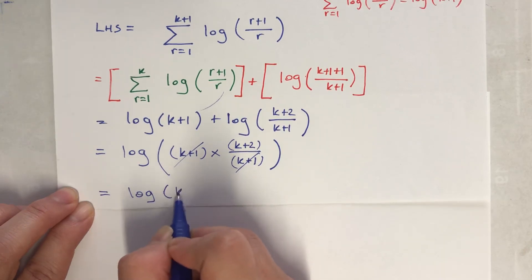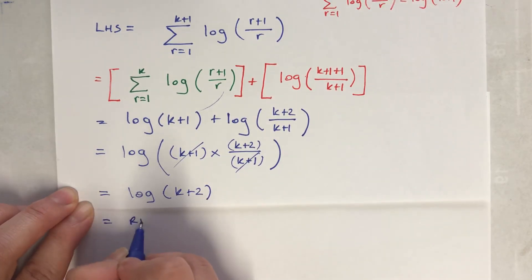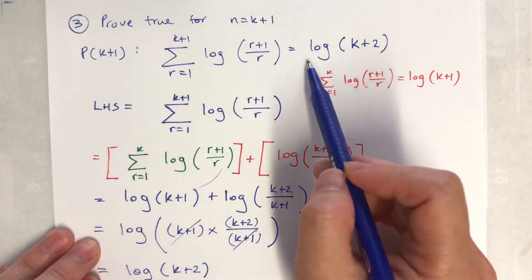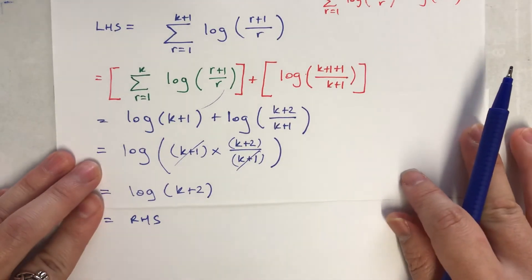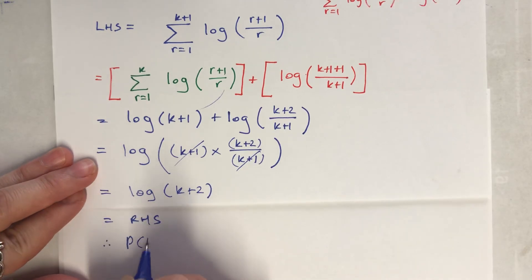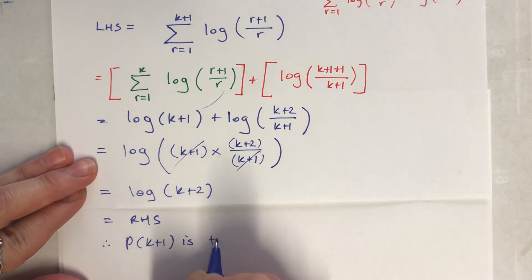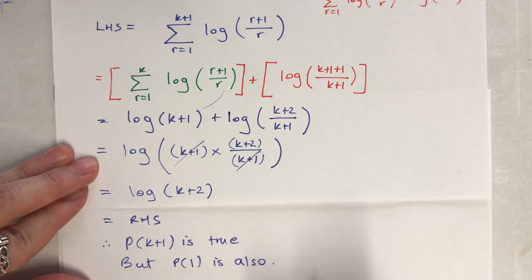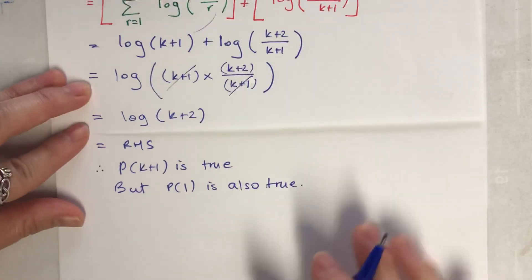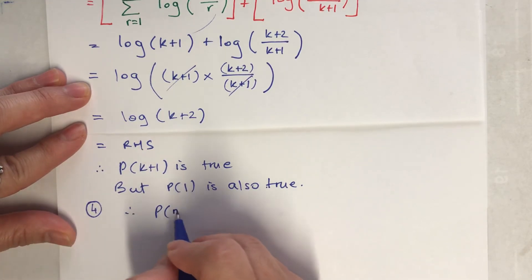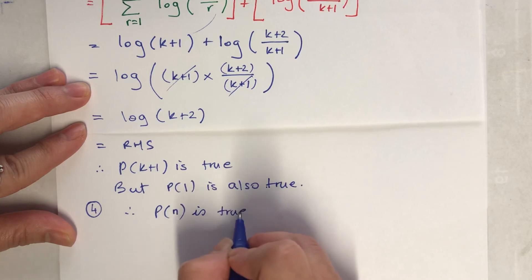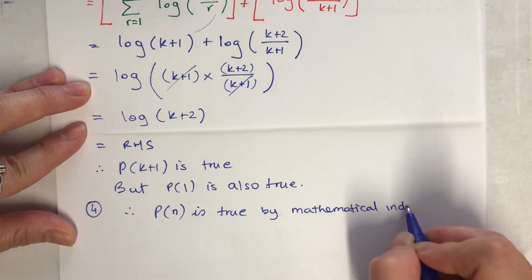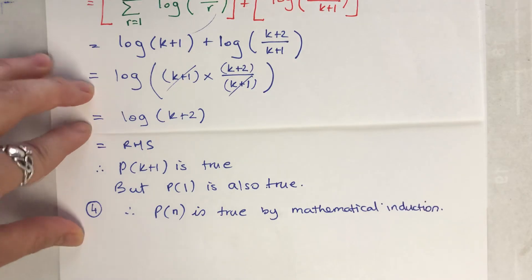So that becomes log of (k+1) times (k+2)/(k+1), and we can cancel the (k+1), giving us log(k+2), which is exactly the right hand side. Therefore P(k+1) is true, and since P(1) is also true, by mathematical induction P(n) is true for all n. Excellent, well done!